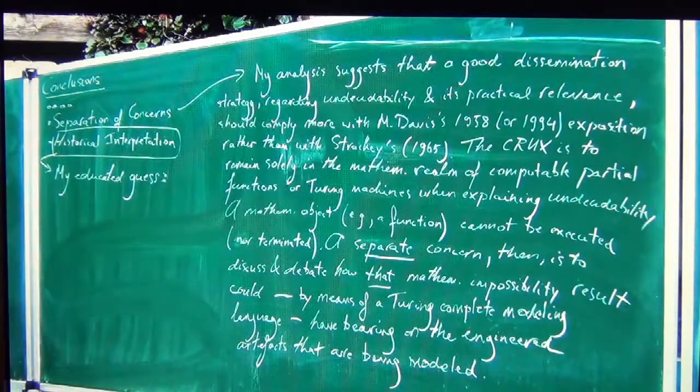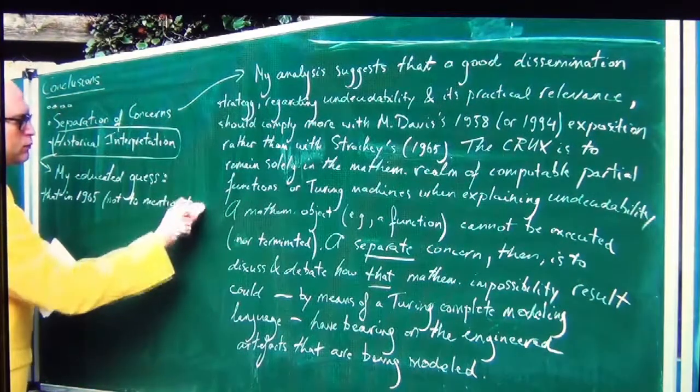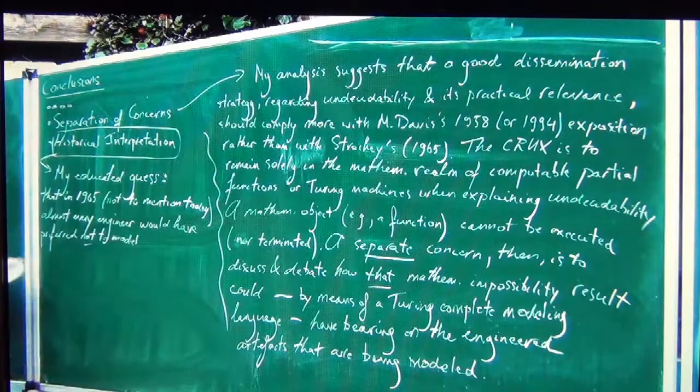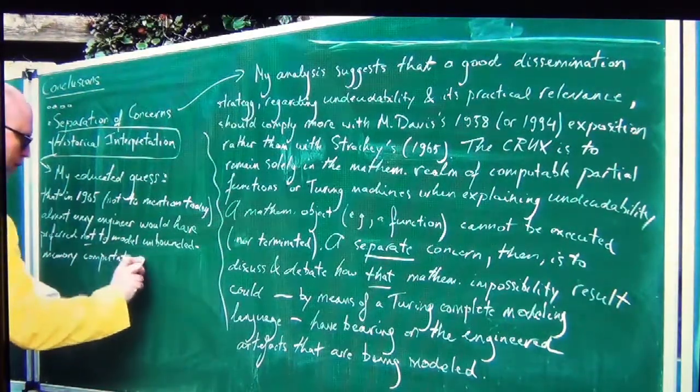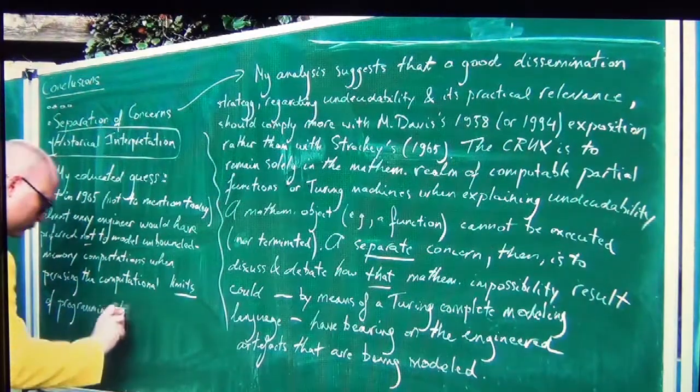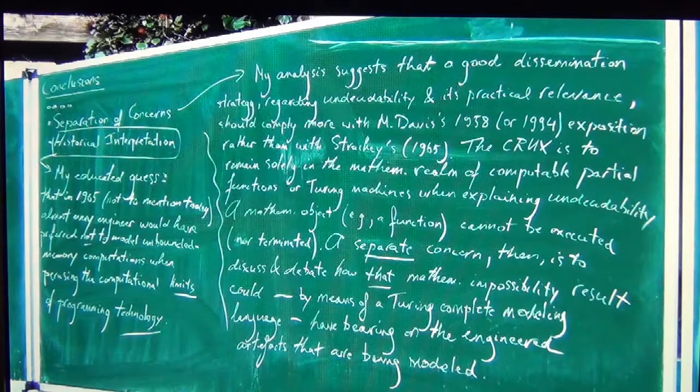Historical interpretation: my educated guess is that in 1965, almost every engineer would have preferred not to model unbounded memory computations when studying the computational limits of programming technology. No-nonsense engineers work with finite abstractions, hardly ever with infinite ones. The engineer would preferably resort to finite state machines, or perhaps linear bounded automata, instead of computable partial functions.